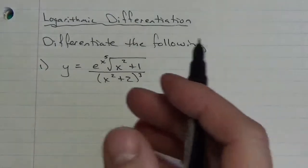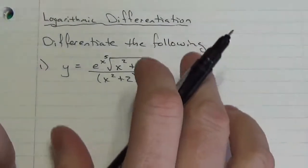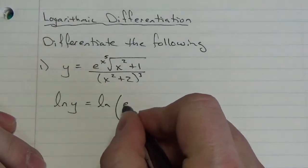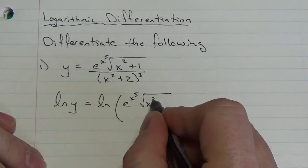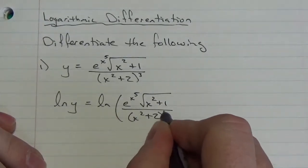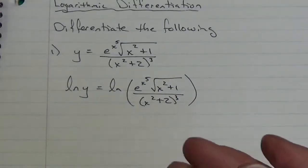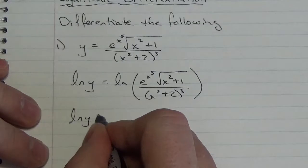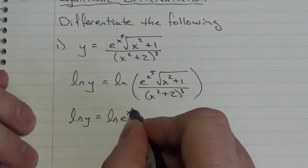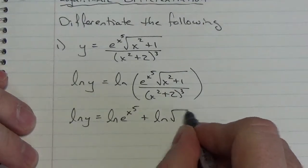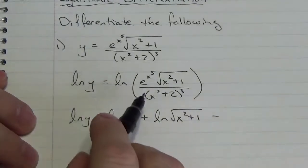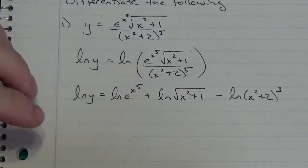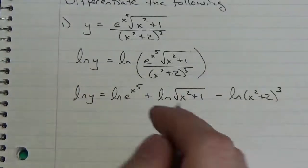Comparatively speaking, it is going to be a little bit awkward. So here's what we can do: we can actually take the natural log of both sides. So this will be the natural log of e to the x to the fifth, times the square root of x squared plus 1, over x squared plus 2 cubed. Now because of the laws of logarithms, I'm allowed to expand this out. So the natural log of y is going to be the natural log of e to the fifth, plus the natural log of the square root of x squared plus 1, minus — because of the division — the natural log of x squared plus 2 cubed.